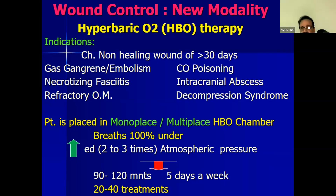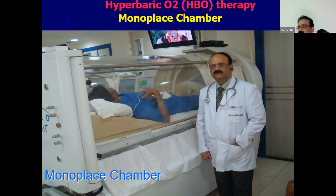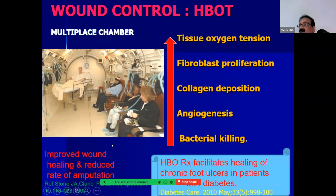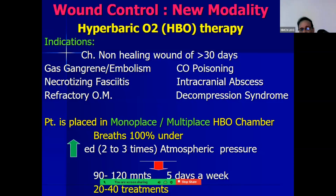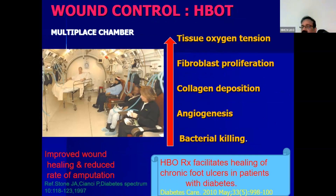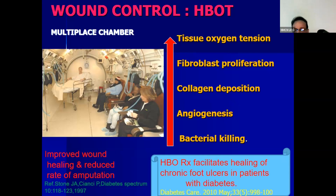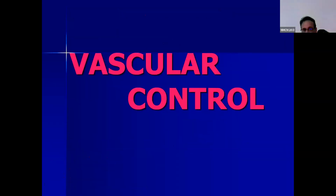In hyperbaric oxygen therapy, the patient is put inside a monoplace glass chamber, or multiple patients can sit simultaneously in a larger chamber, and they are exposed to 100% oxygen under two to three times atmospheric pressure. This therapy is given for 90 to 120 minutes, five to six days a week, for a total of 20 to 40 treatments. This much pressurized oxygen causes increased tissue oxygen tension, increased fibroblast proliferation, more granulation tissue formation, collagen deposition, increased angiogenesis, and bacterial clearance. Numerous trials have proven improved wound healing with a reduced rate of amputation.